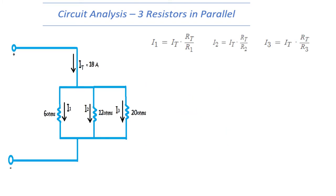So by using the general equation and finding the resistance total to be 3.33 ohms, I1 becomes 18 amps multiplied by 3.3 ohms over 6 ohms, I2 becomes 18 amps multiplied by 3.3 ohms over 12 ohms, and so on for I3.